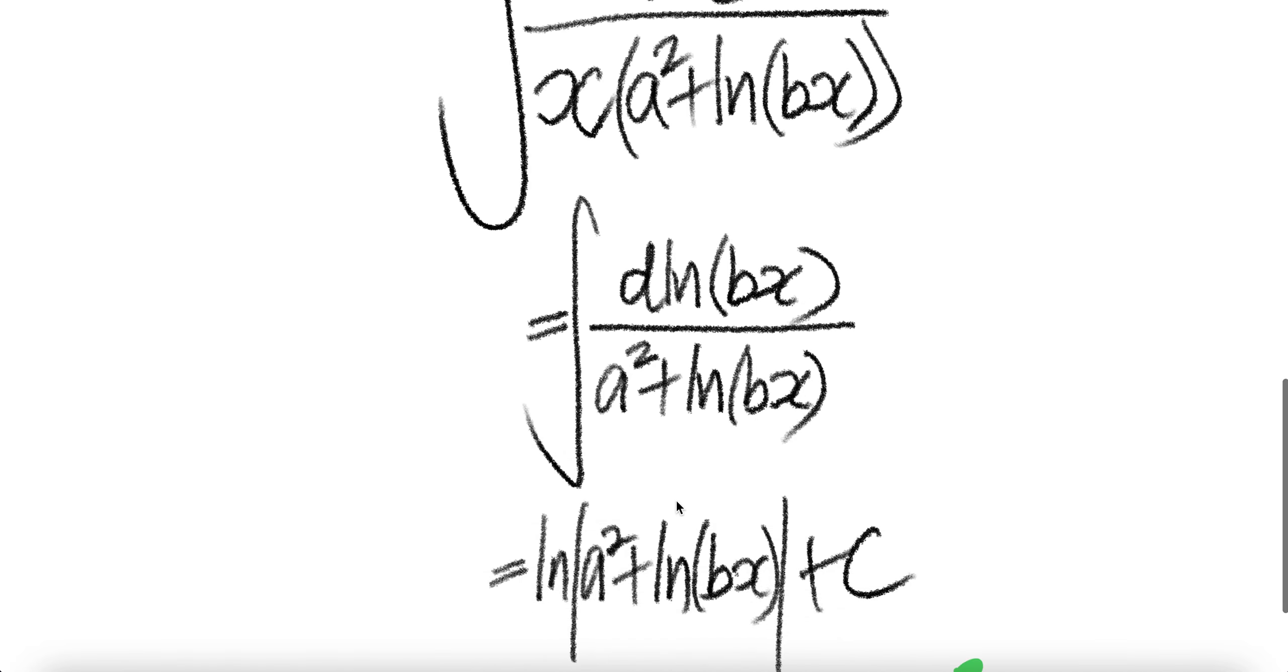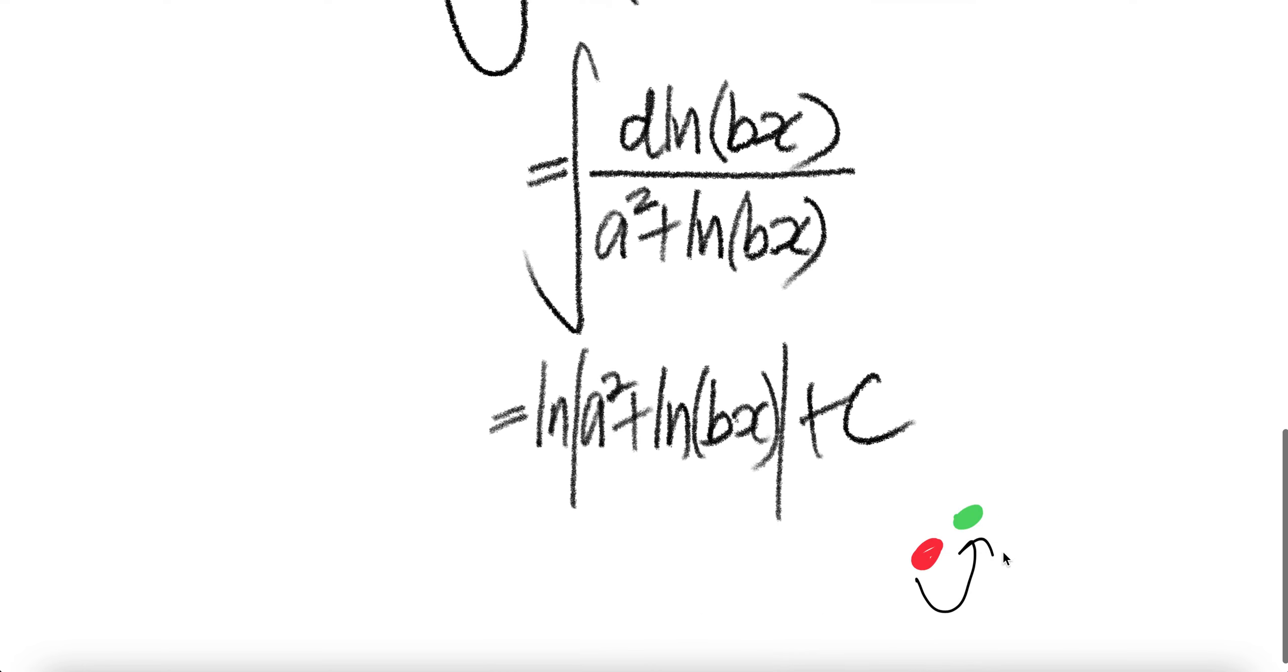At this stage, the integral is very simple. The result of the integral will be ln of the absolute value of a squared plus ln(bx) plus c. Done.